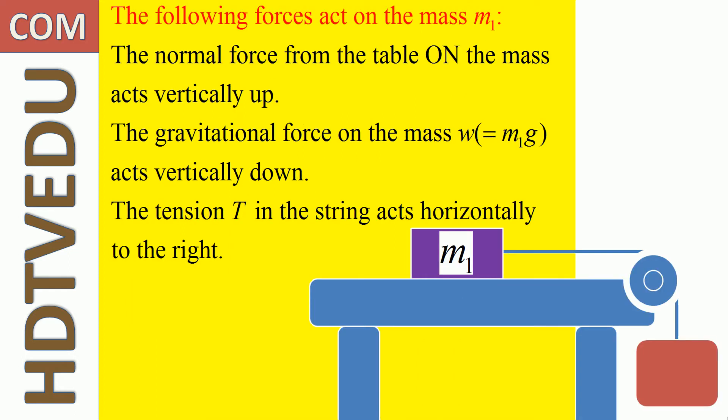The following forces act on mass M1: the normal force from the table acts vertically up; the gravitational force W equals M1g acts vertically down; and the tension T in the string acts horizontally to the right, away from the mass M1.